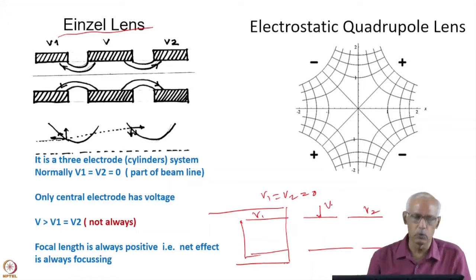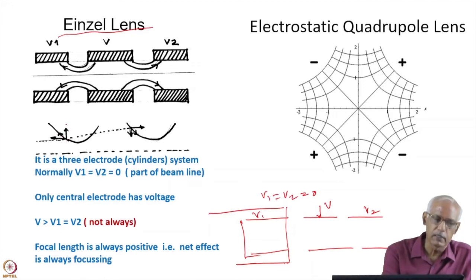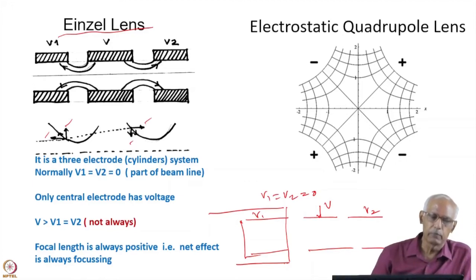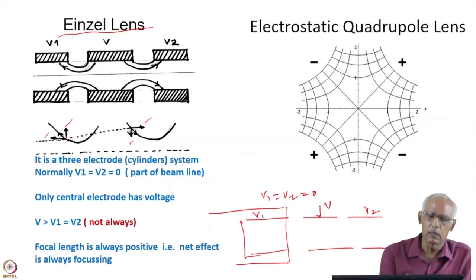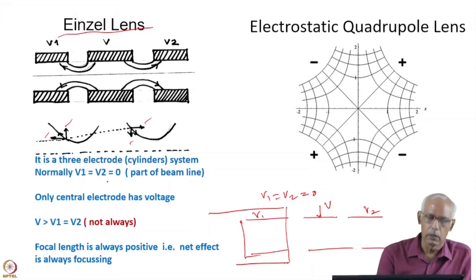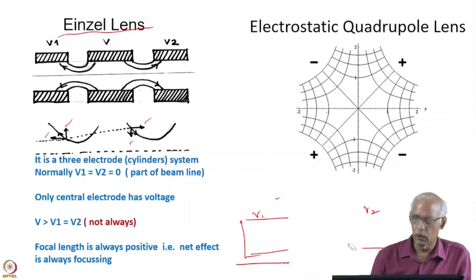You can see the field lines which are responsible for the focusing. At any point, there will be a force in one direction, and this will have two components — one in the transverse direction and one along the beam. Similarly, at other points there are two components which will be responsible for focusing the beam. If one region is focusing, the other will be defocusing because the field direction reverses. So if the first one is defocusing, then the second will be focusing. The total focal length will be positive, meaning there will be a net focusing effect from this lens.